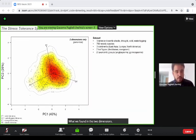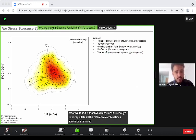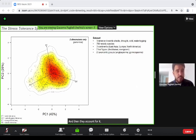What we found is that two dimensions are enough to encapsulate all the stress tolerance combinations across our dataset, and they account for 80 percent of the variance in the data.